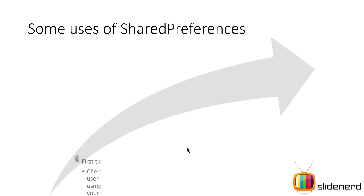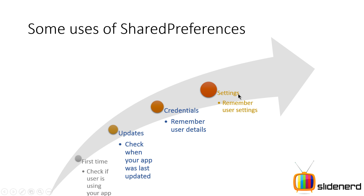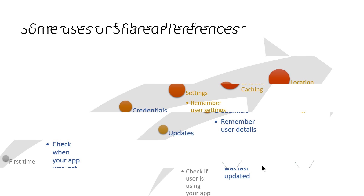What can you do with Shared Preferences? First, you can check if the user is visiting your app for the first time — maybe checking some kind of counter or asking the user some details and storing it. You can check for updates, like when your app was last updated — every time you download an update, simply store the time and date inside the shared preference file. You can store credentials like remembering the username and password for the user's Dropbox login, so you don't have to ask them again and again. You can store user settings, like locking portrait mode. And finally, there is location caching — you can store the user's last known position so that the next time they open the app, it shows them where they were last time.